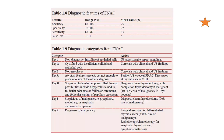An extremely important chart covers diagnostic features from FNAC of the thyroid, including sensitivity and specificity. At least two questions are expected from this chart. Thy1 is non-diagnostic with insufficient epithelial cells — perform ultrasound reassessment plus or minus repeat sampling. Thy1c is fluid with insufficient colloid and epithelial cells — correlate with clinical and ultrasound findings. Thy2 is non-neoplastic — correlate with clinical and ultrasound findings. Thy3a has atypical features but not enough to place in other categories — further ultrasound plus or minus repeat FNA is needed, and thyroid cancer MDT discussion may be carried out.